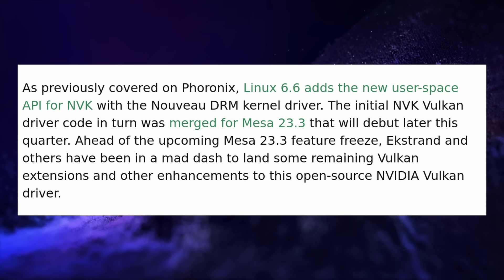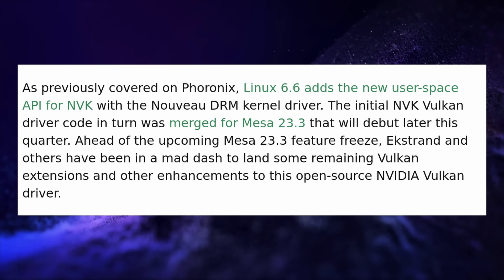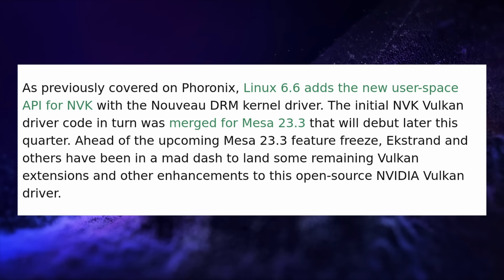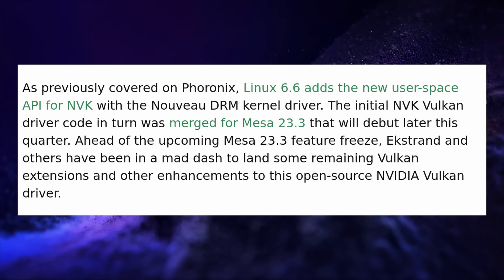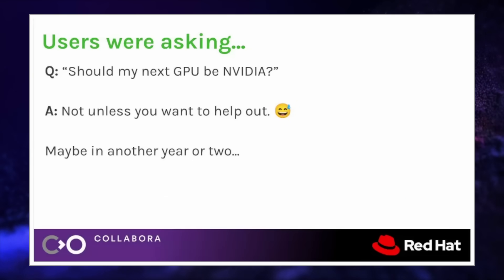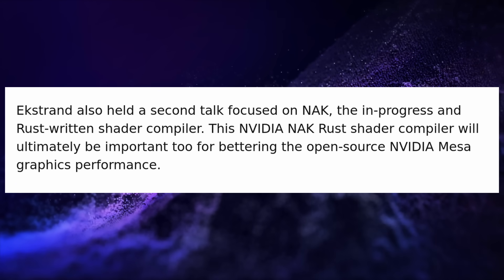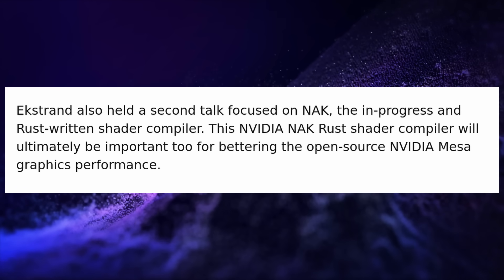We also have some progress on the open source NVIDIA Vulkan driver, NVK. Linux kernel 6.6 will add the user space API that NVK needs, and the initial NVK code has been merged for MESA 23.3, which should release before the end of the year. Developers are trying to land as many Vulkan extensions and improvements as they can to make sure that the first release is solid. Of course, as the developer puts it, if you plan to buy an NVIDIA GPU because of this driver coming, you probably shouldn't — as it won't be very usable for another year or two. They're also working on a Rust-based shader compiler that will be crucial to ensure good performance in the future.